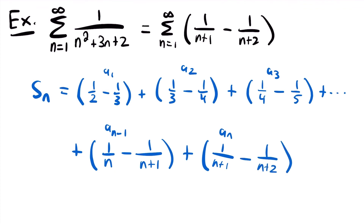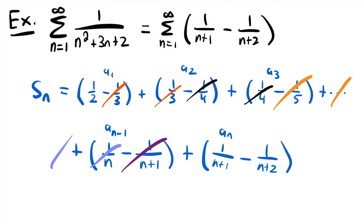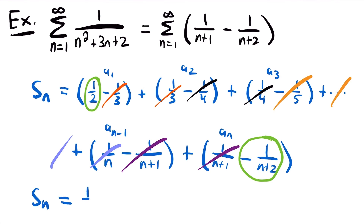Now we can see the collapsing terms. Negative 1 third and positive 1 third cancel. Negative 1 fourth and positive 1 fourth cancel. The negative 1 fifth will cancel with a positive 1 fifth in the next term. The positive 1 divided by n cancels with a term before it. And negative 1 divided by n plus 1 cancels with this positive 1 divided by n plus 1, leaving just positive 1 half and negative 1 divided by n plus 2. So the nth partial sum equals 1 half minus 1 divided by n plus 2.